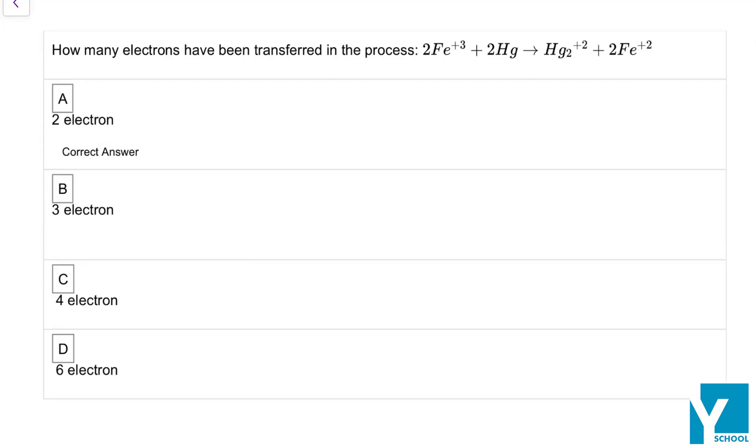How many electrons have been transferred in this process? This is your net reaction. So first of all, let us assign the oxidation states here. It is plus 3 and mercury is 0. The oxidation state will be plus 1 and the oxidation state is plus 2. So basically plus 3 is changing to plus 2.